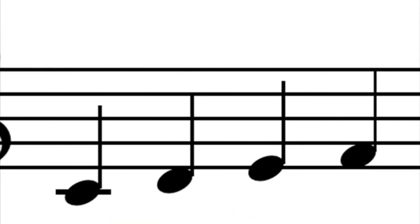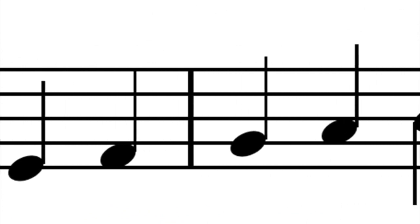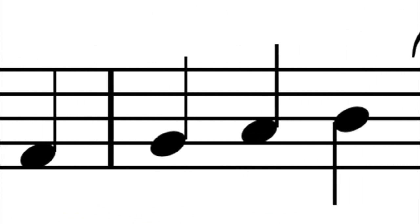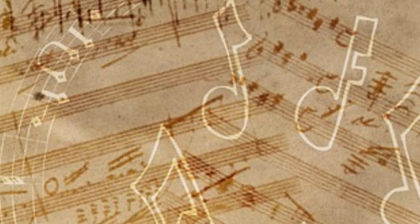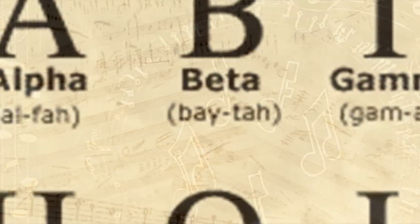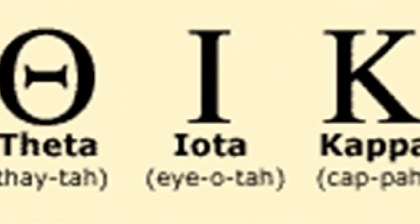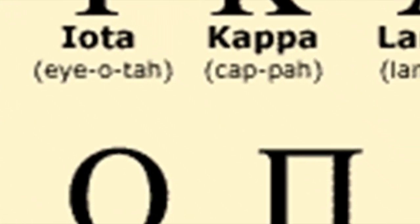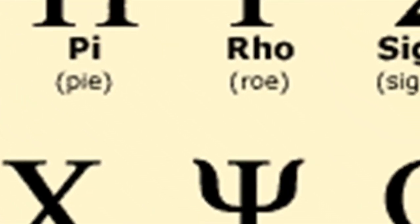He also discovered that when you combine those intervals, a musical scale is created as well as 12 different musical scales. This is said to be the birth of music theory itself. Around 100 AD, ancient Greeks started notating songs with the earliest form of music notation, and that is said to have included letters of the Greek alphabet.